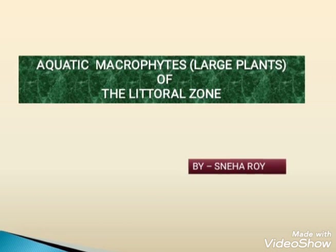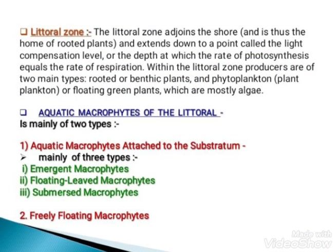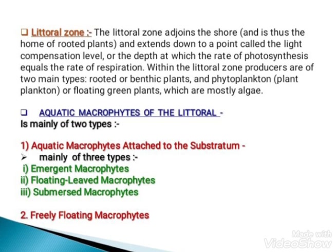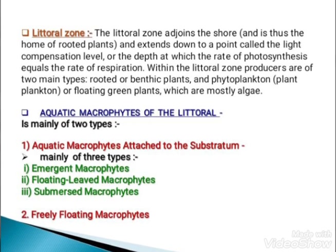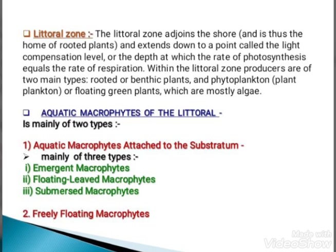First, a brief introduction of the littoral zone. The littoral zone adjoins the shore and extends down to a point called the light compensation level, which is the depth at which the rate of photosynthesis equals the rate of respiration. Within the littoral zone, producers are of two main types: rooted or benthic plants, and phytoplankton or floating green plants.